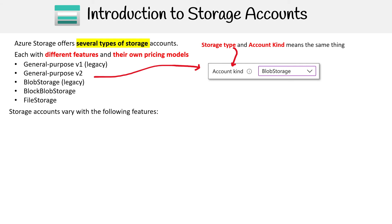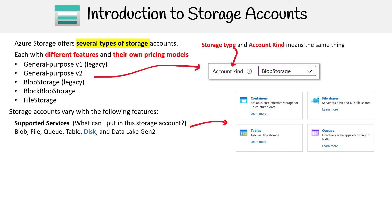Storage accounts are going to vary based on features. The common features we'll see across storage will be supported services — essentially, where can I put the storage account? On the right-hand side, you can see that if you make a General Purpose version two, what you have access to — such as containers, queues, tables, or file shares — will change based on what you're using.